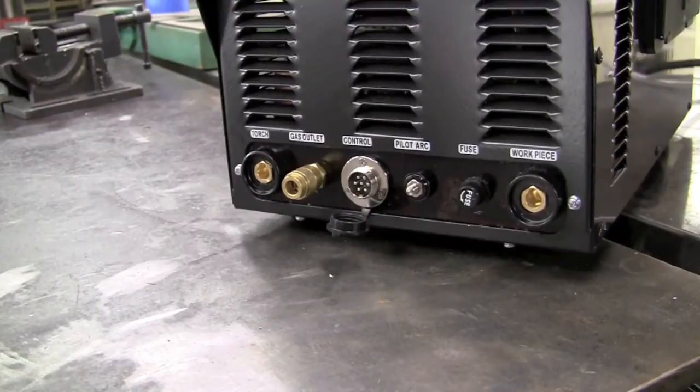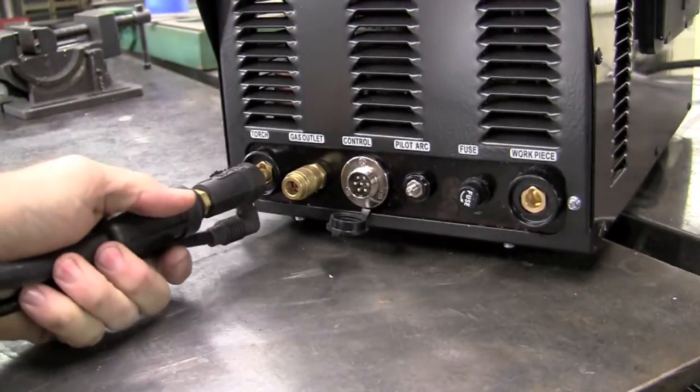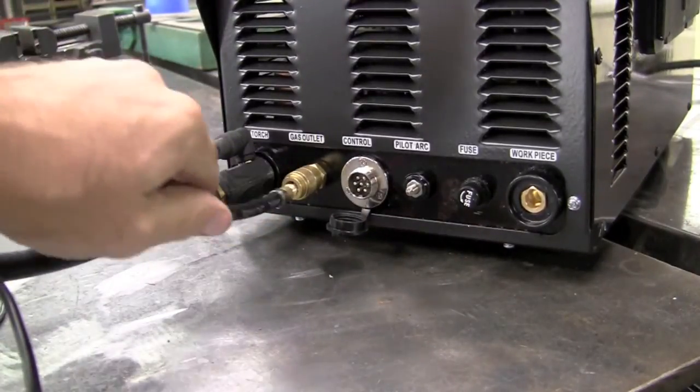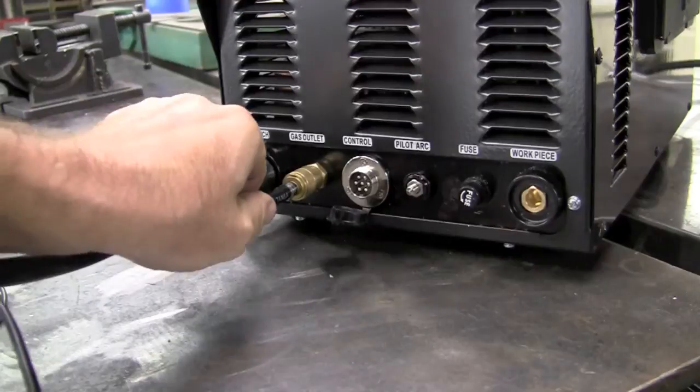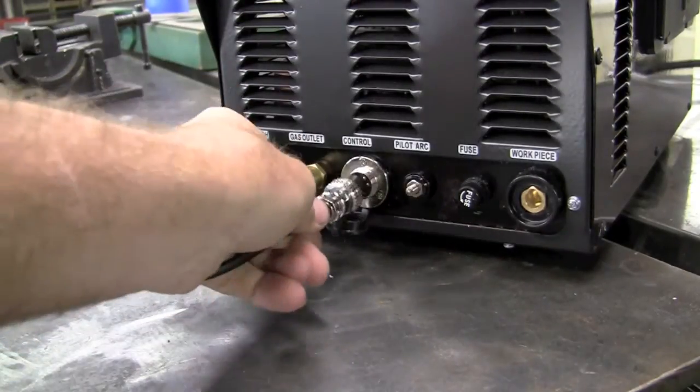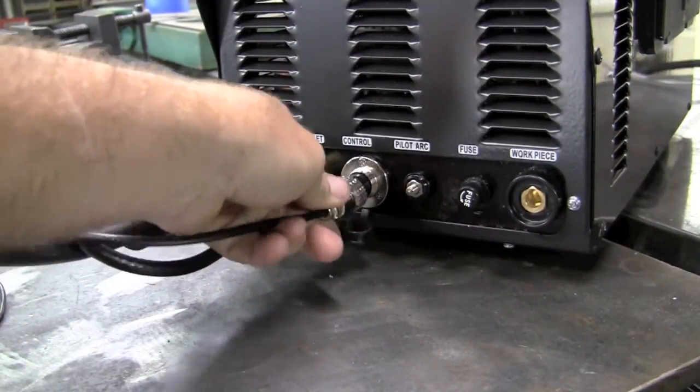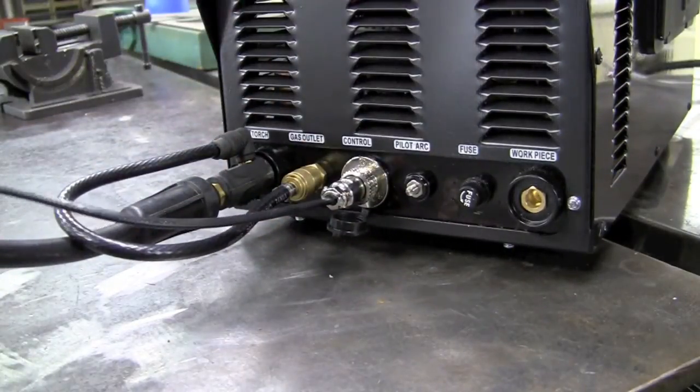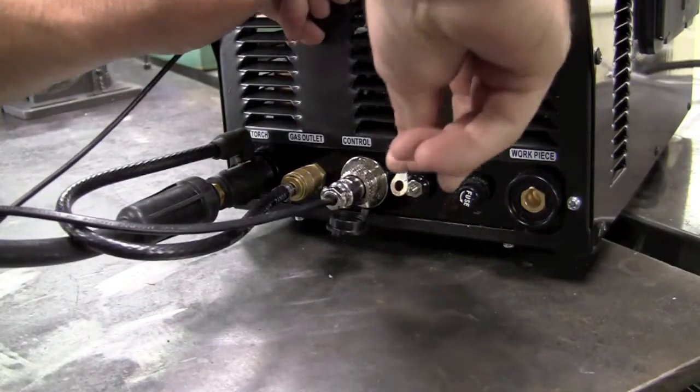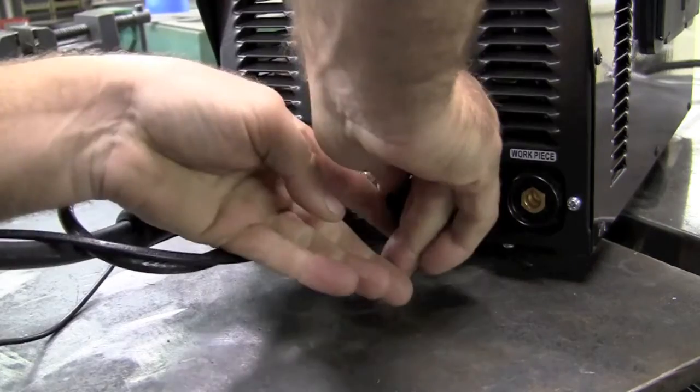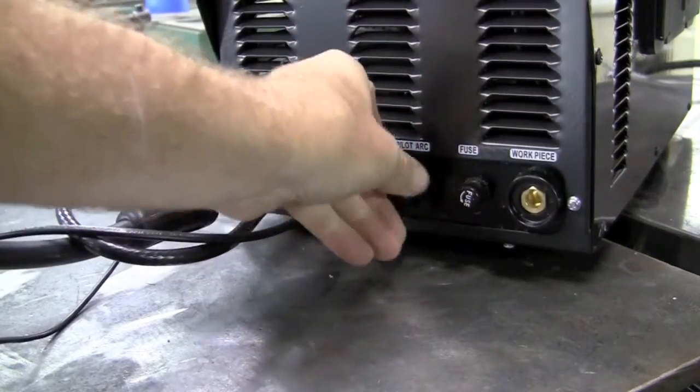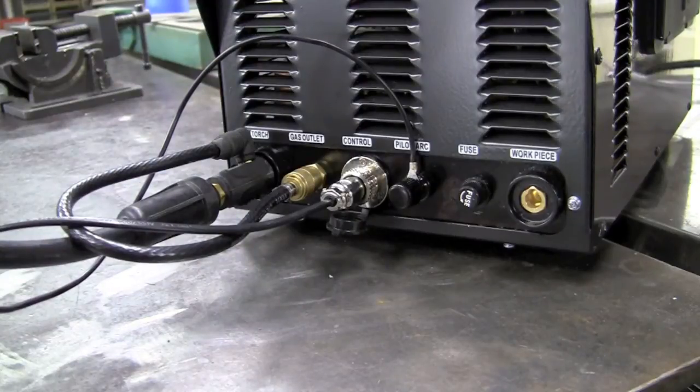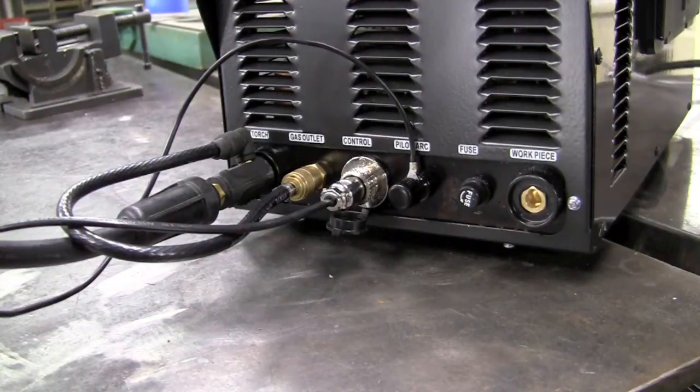Now let's get the machine set up for the plasma torch. Once again, we'll stick our torch in, give it a turn. We'll hook up our quick disconnect on our gas outlet. This pops in place. Our control for the torch trigger. And then we have one more lead for the pilot arc. Now we're set up and ready to go. We'll add our ground cable and add air and we're ready to cut.